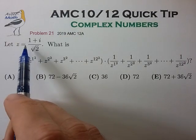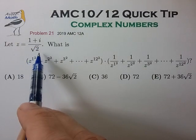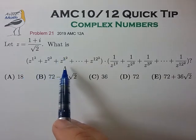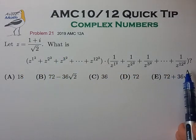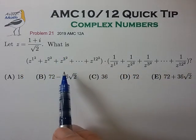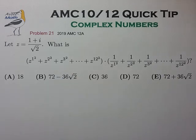Let z be the number 1 plus i divided by root 2. What is the product of these two series? That looks like a lot of terms. Too many to expand, so let's pause to review a few tips on complex numbers.